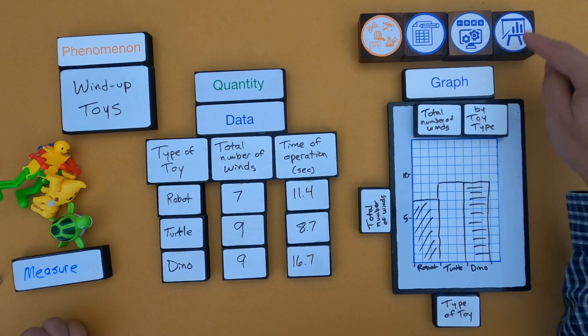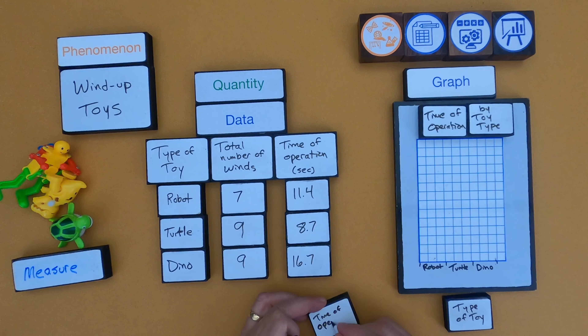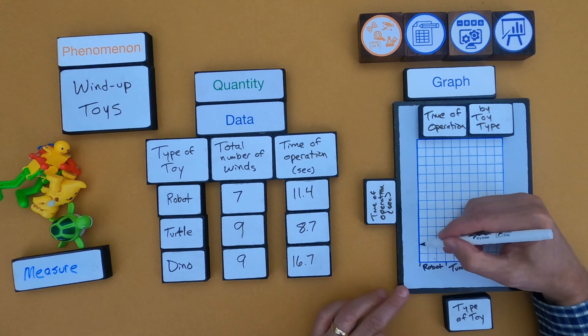The other graph shows how long they ran. Here's the graph: 'Time of Operation by Toy Type' — time of operation on the y-axis. I had to adjust my scale because I wouldn't have been able to count each square and get all the way to 16.7, so I just adjusted the scale. I can see that the dino had the longest time of operation — almost as long as the other two combined — even though the total number of winds is similar.